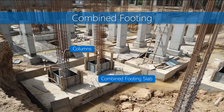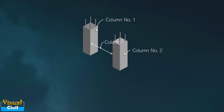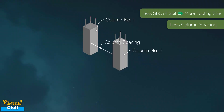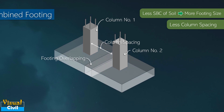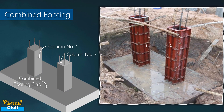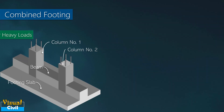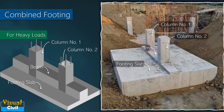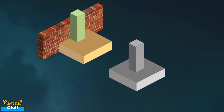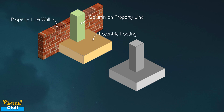The next type of shallow foundation is combined footing. When the column spacing of two adjacent columns is less, or the safe bearing capacity of the soil is less, the isolated footings of these columns may overlap. When columns are subjected to relatively lighter loads, a simple slab-type combined footing can be used, but if the loads are heavy, a beam-slab type combined footing can be used to economize material.